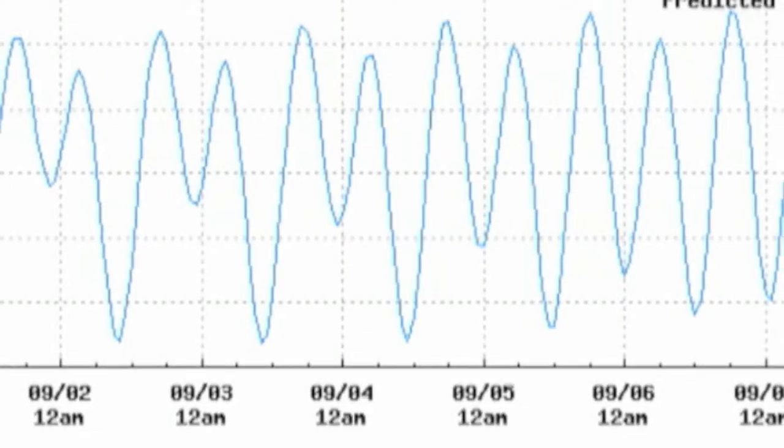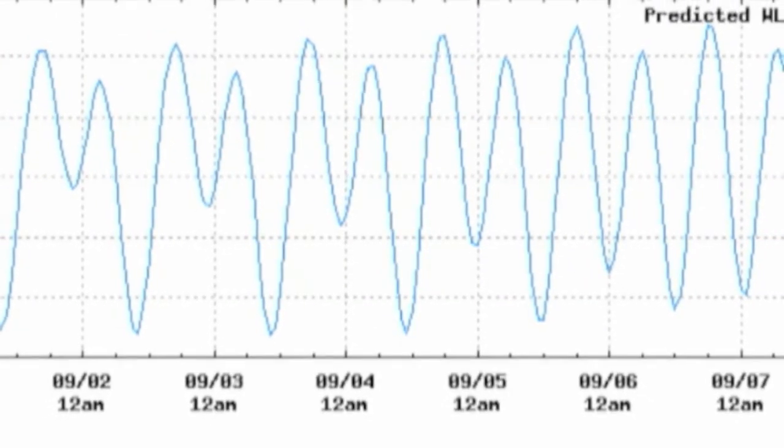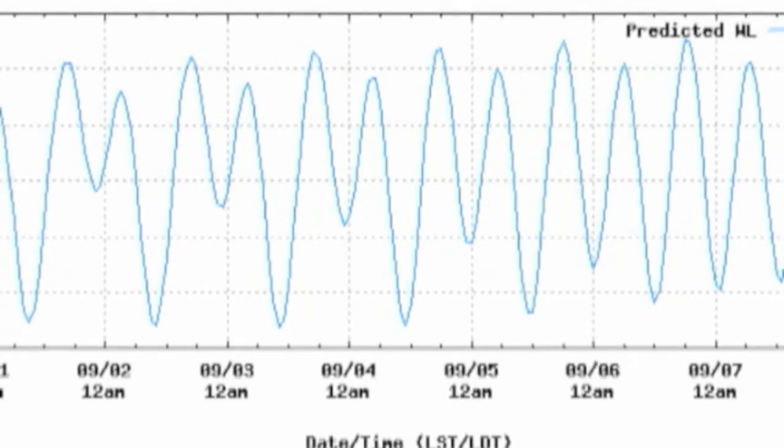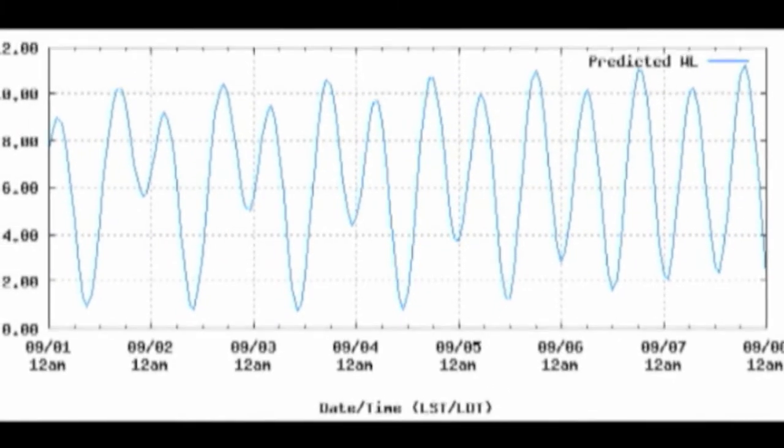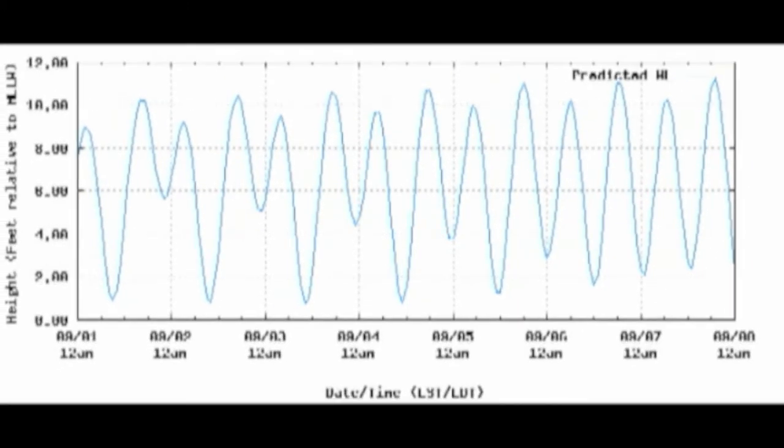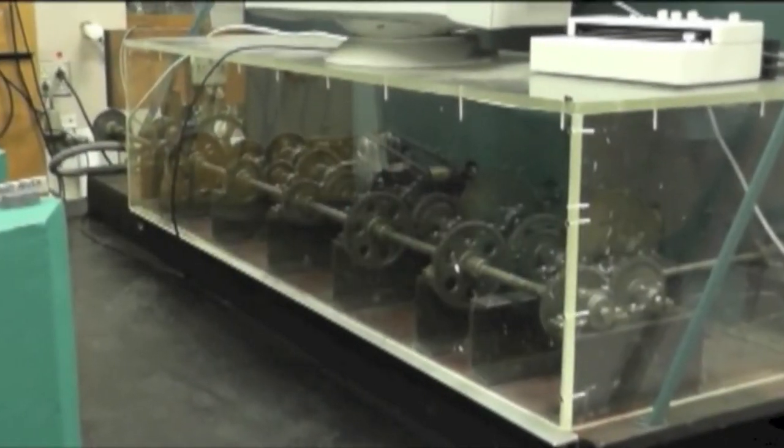Tidal patterns in Puget Sound vary from one day to the next. The extent and timing of the plunger motions in the model must change to reproduce these real variations in the tides. When the model was first built,